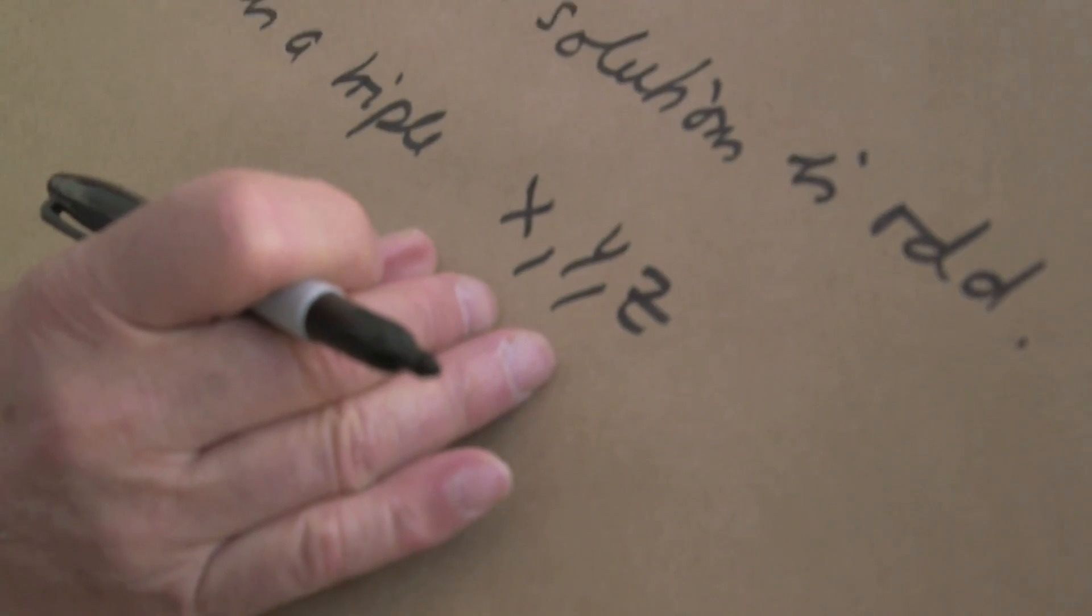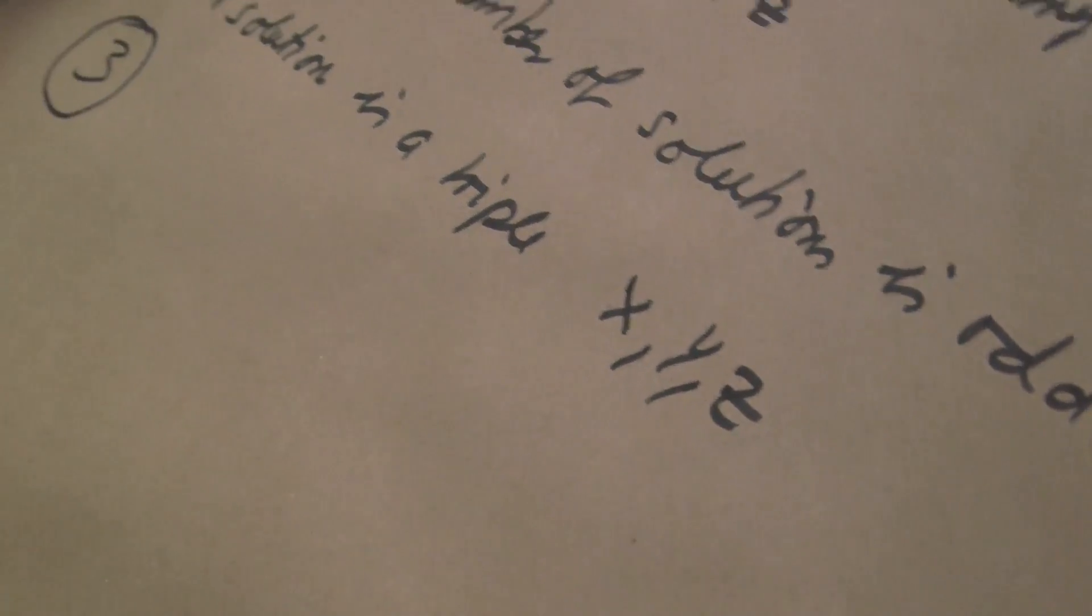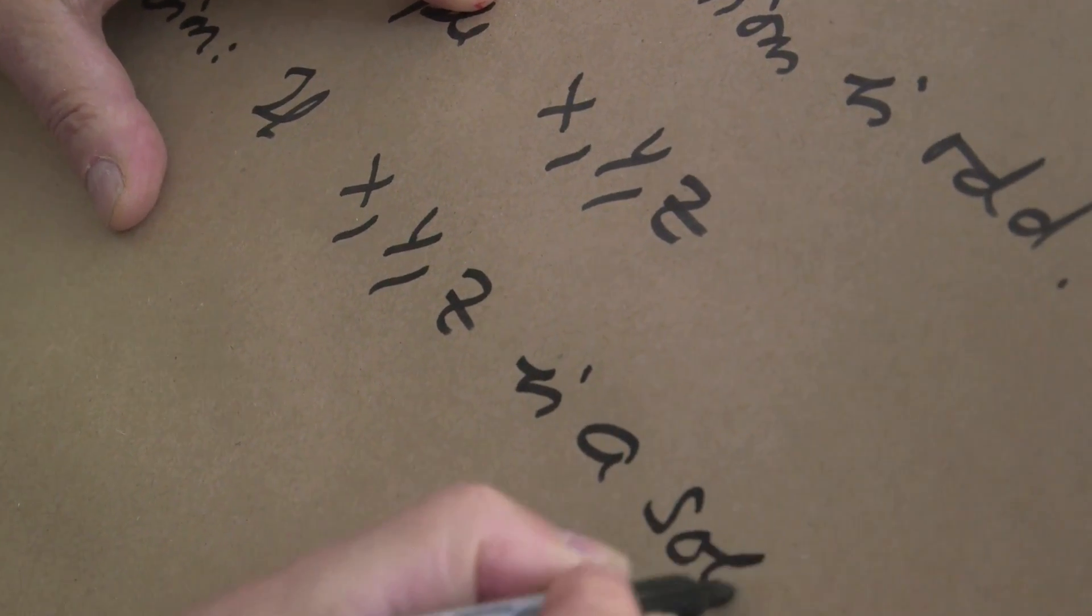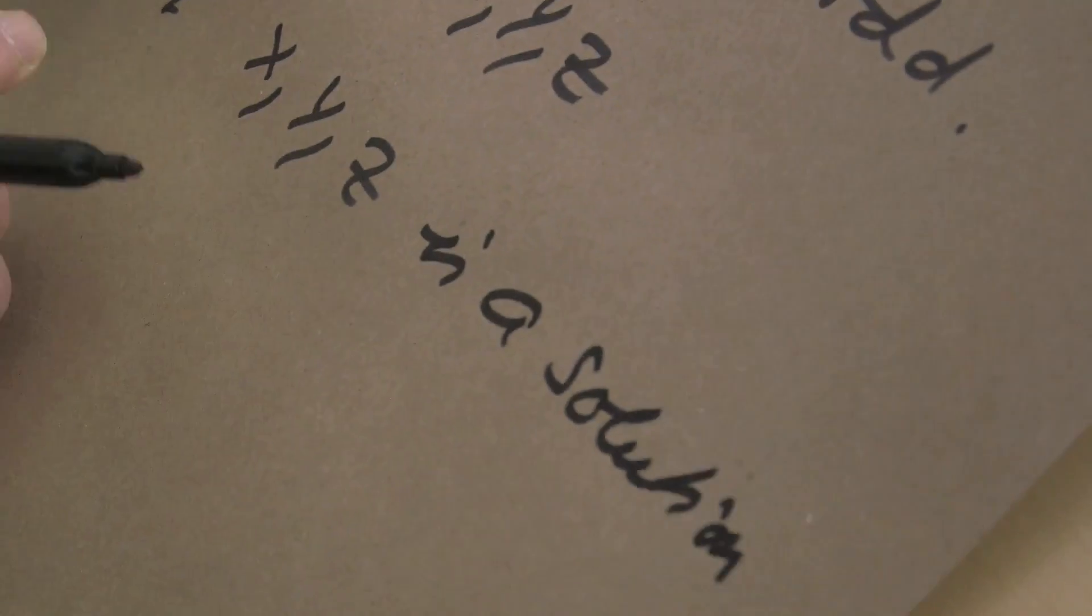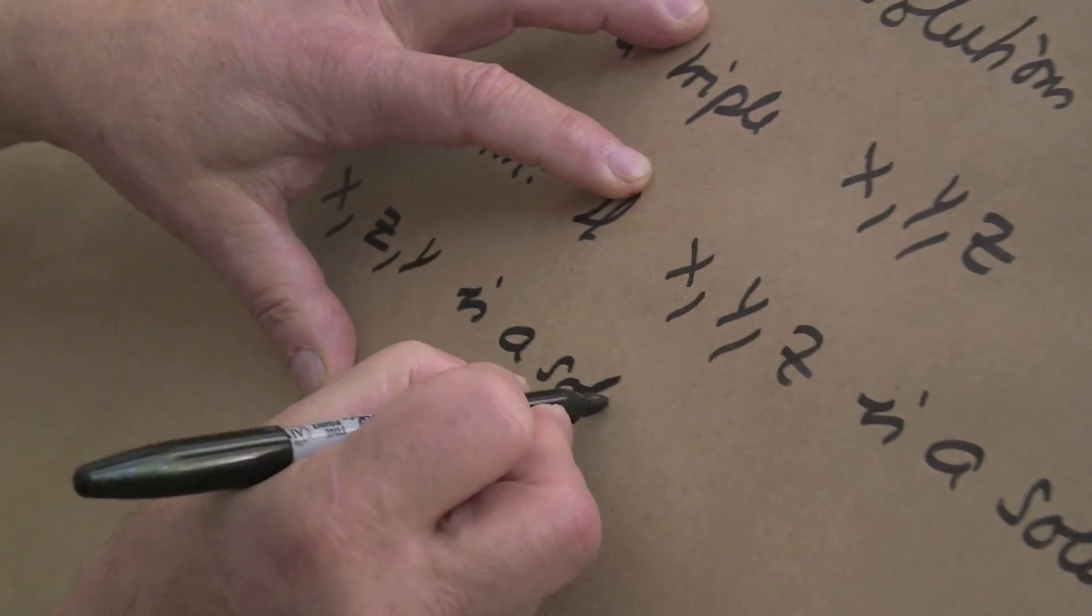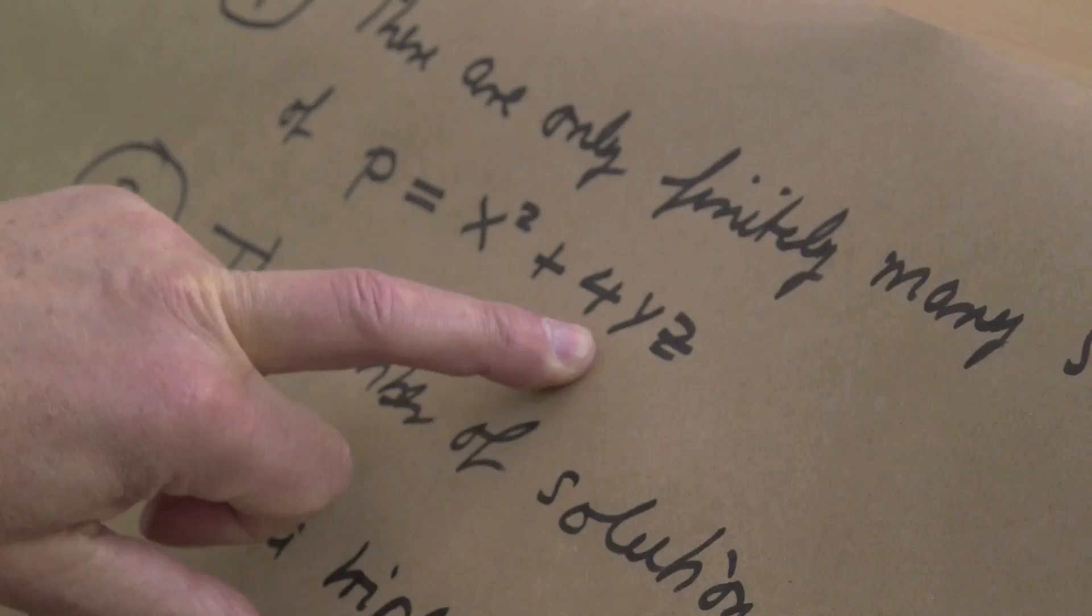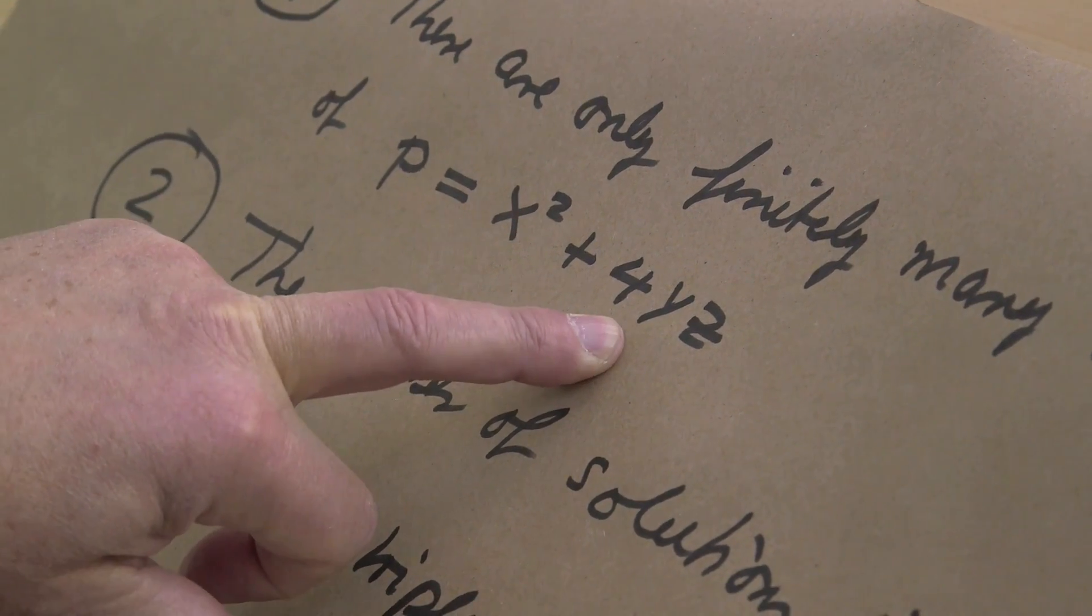So that's very important that we count the solutions as ordered triples. And now there comes a little observation. If x, y, z is a solution (meaning p's x squared plus 4yz), then x, z, and y is a solution, because y times z is equal to z times y. So it could be that if y is not equal to z, if we interchange, we get a second solution.